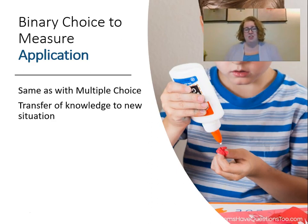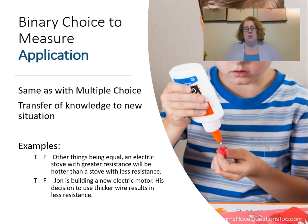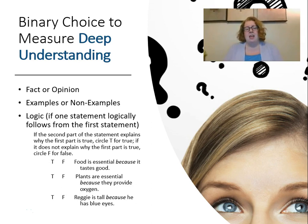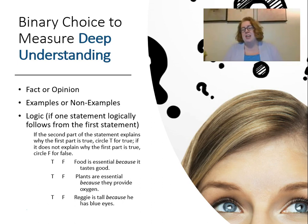We can also use binary choice to measure application — the transfer of knowledge to a new situation, just like with multiple choice. For example, 'An electric stove with greater resistance will be hotter than a stove with less resistance' takes knowledge of electricity and resistance and applies it to a new situation. Binary choice can also measure deep understanding using fact-or-opinion, examples, non-examples, or logic. For logic, the key is that the first part of every statement should be true, and we're measuring whether the 'because' clause makes the second part true — for example, 'Food is essential because it tastes good' versus 'Plants are essential because they provide oxygen' versus 'Reggie is tall because he has blue eyes.' We're testing whether students can make that logical inference.